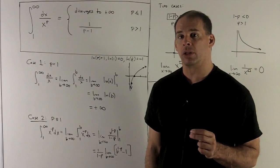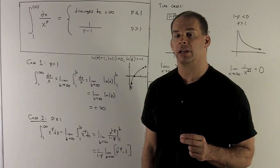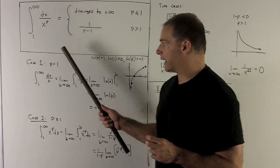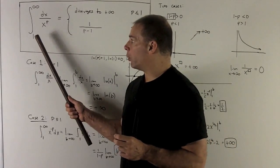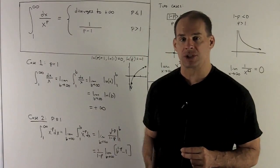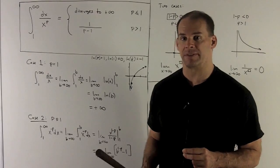Let's consider a special improper integral that we're going to need for chapter 9. We're looking at the improper integral from 1 to infinity of dx over x raised to the p, where p is a fixed number.